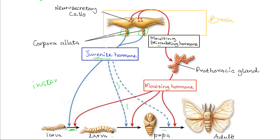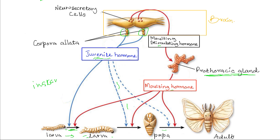Molting stimulating hormone, produced by the neurosecretory cells, influences the prothoracic gland found in the chest to release molting hormone. The molting hormone, as the name suggests, brings about or stimulates molting, so the larva will molt from a lower stage to a higher, more complex stage. Molting mainly occurs during the larval stages, and the progression from one stage to another is stimulated by the molting hormone.